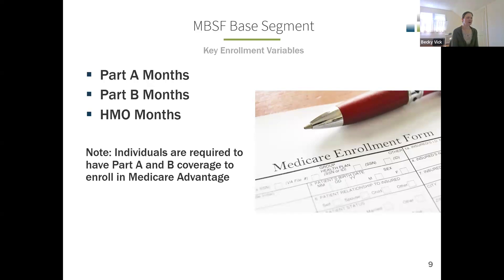The MBSF is the go-to file for identifying enrollment. There are an array of enrollment variables — you can identify those who have Part A, Part B, and HMO. For each of these parts, there will be an array of 12 variables, one for each month of the year, and there will also be a summary variable that is a tally of the total number of months of coverage in that part. By combining these variables and counting them with your statistical packages, you can get at the enrollment for your cohort and identify your cohort the way that you like.